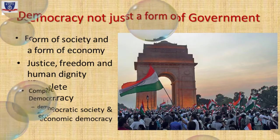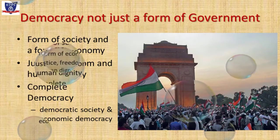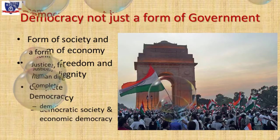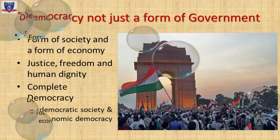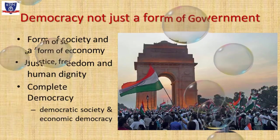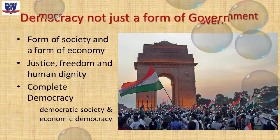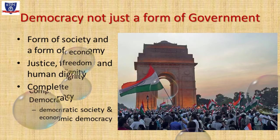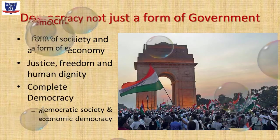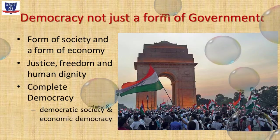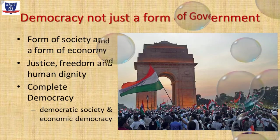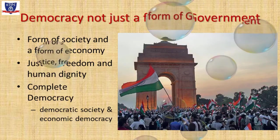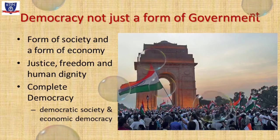In spite of all the elements of democracy existing in the country, it may still not be truly democratic in its complete sense. Democracy is not just a form of government, but a form of society and a form of economy. The values of justice, freedom, and human dignity should be deeply embedded not only in the political system, but also in the social and economic life of the people. Just a right to vote is not enough. There should be a democratic society as well as economic democracy for a nation to call itself a complete democracy.